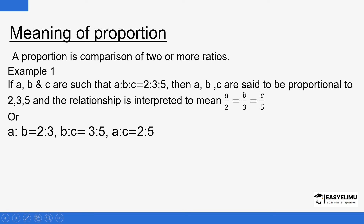This relationship can be used to solve many problems in mathematics. Remember, fractions are just another form of expressing ratios. For example, the fraction a/2 can also be expressed as a:b = 2:3. Similarly, b:c = 3:5, and a:c = 2:5 — the first one to the last one.